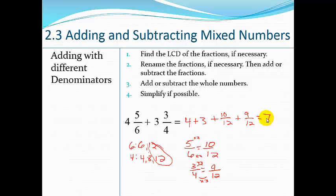I'm going to rewrite 5/6 as 10/12 plus 9/12. So 4 plus 3 is 7, plus 10 plus 9 is 19/12. Now this is what we call an improper fraction, so I know there's one whole 12 in there. I'm going to rewrite 19/12 as 1 and 7/12, because 12 goes into 19 one time with 7/12 left over. So this is going to be 7 plus 1 and 7/12, which equals 8 and 7/12.